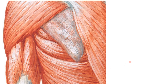Coming to the boundaries of this triangle of auscultation: the medial boundary is formed by the lateral border of the trapezius muscle. The lateral boundary is formed by the medial border of the scapula. The apex is formed by the joining of the medial and lateral boundaries. The base is formed by the superior border of the latissimus dorsi. Between these three boundaries you can identify the triangular space called the triangle of auscultation.